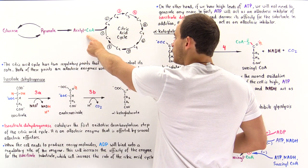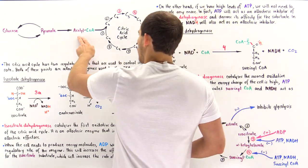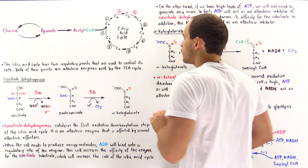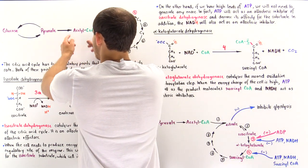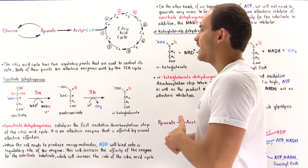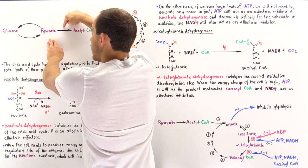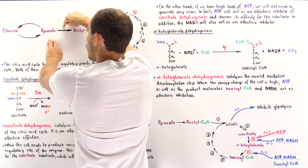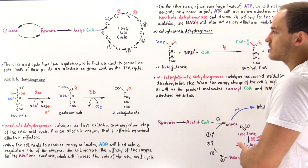Once this step takes place, it's an irreversible step that commits the glucose derivative, the acetyl coenzyme A, to undergoing the citric acid cycle, or in some cases we can use it to form fat molecules, as we'll discuss in a future lecture. By regulating this step, called pyruvate oxidative decarboxylation, and either turning it on or off, we can regulate the rate of the citric acid cycle.